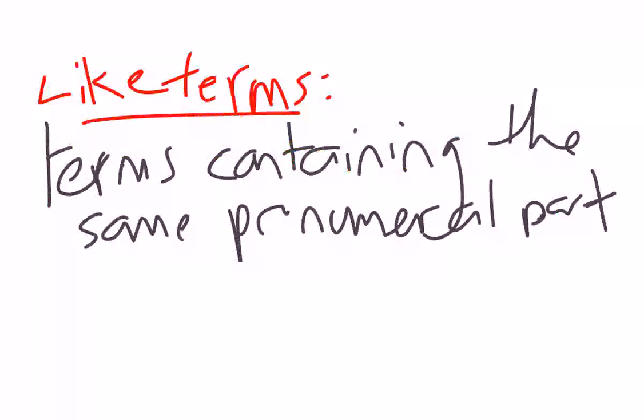Now in algebra, like terms are terms that contain the same pronumeral part. Terms, you'll remember, are parts of the expression separated out by plus and minus signs. And the pronumeral part has to be the same pronumerals with the same powers of the pronumerals.